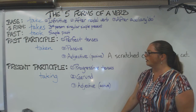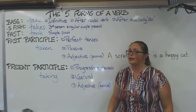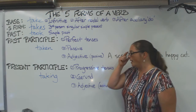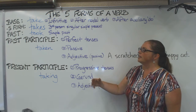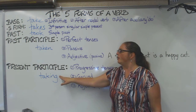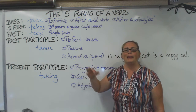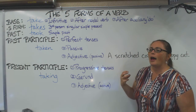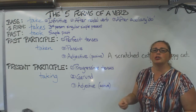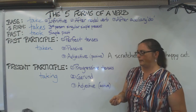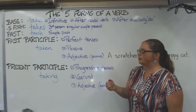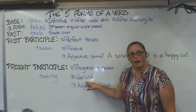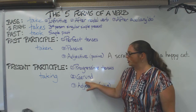The present participle is also used as a gerund. For example: 'Taking tests can be very stressful.' The gerund is basically the verb in a noun form, used to talk about the action or activity. It can be used as a subject or an object in a sentence.